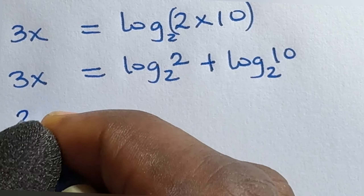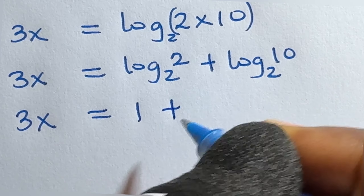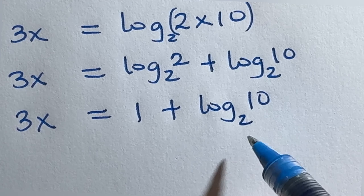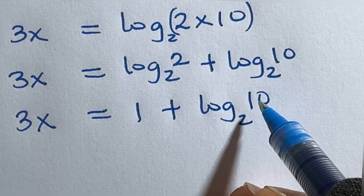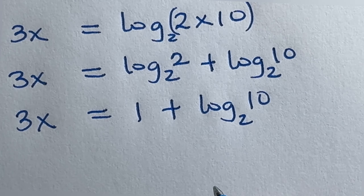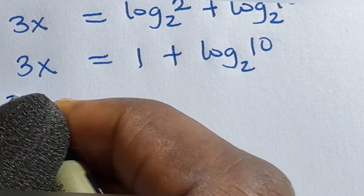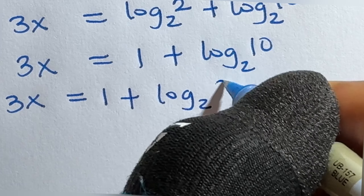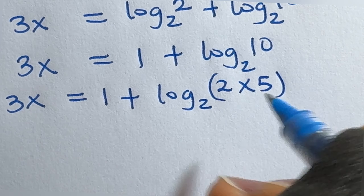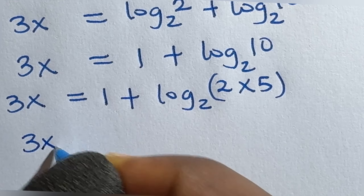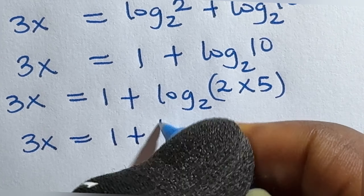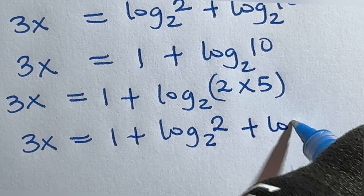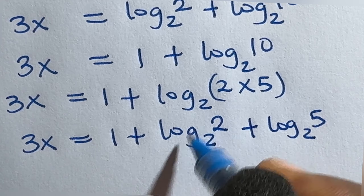Now log₂2 is 1, so we have 3x equal to 1 plus log₂10. On a closer look, I can still separate 10 since we are working in base 2. We can separate 10 into 2 times 5. So this becomes 3x equal to 1 plus log base 2 of 2 times 5. Expanding the bracket, we get log₂2 plus log₂5. This log₂2 also becomes 1.